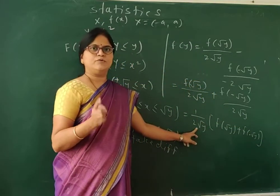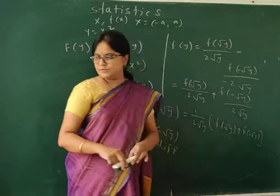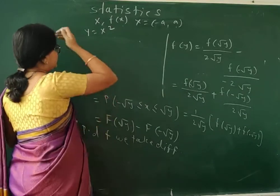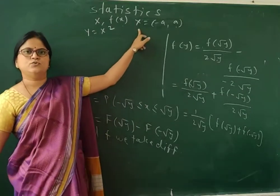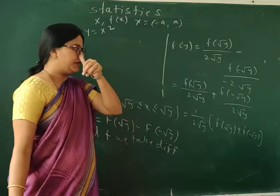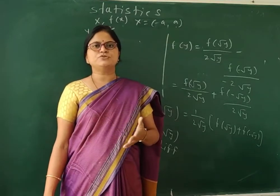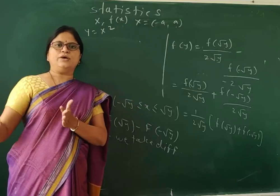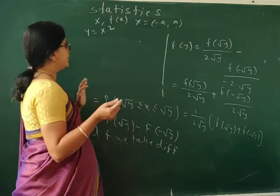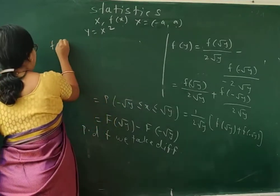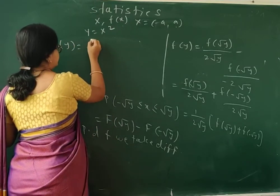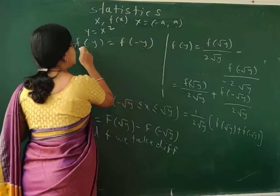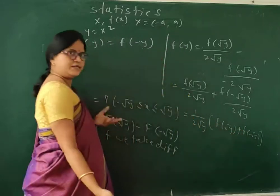Now, if x ranges from −a to a, that means the distribution is symmetric. If the distribution is symmetric, then f(x) = f(−x), which means f(√y) = f(−√y). So in that case, we can simplify and write f_Y(y) = f(√y) / √y, since both terms are equal.